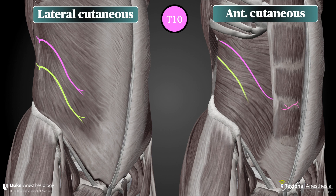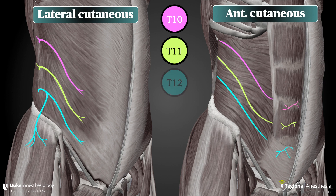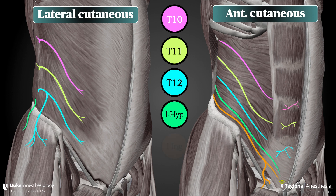T11 is very much the same story. The T12 or subcostal nerve sends a lateral cutaneous branch down over the iliac crest and innervates the skin over the gluteus medius. The anterior branch also ends up terminating superficial to rectus. The iliohypogastric nerve has a twig to the gluteal region before continuing on towards the suprapubic area. The ilioinguinal nerve runs alongside the inguinal ligament. These last two nerves are primarily derived from L1. There are other nerves in the upper abdomen, but these aren't relevant to our TAP block discussion and will be covered in a different video.